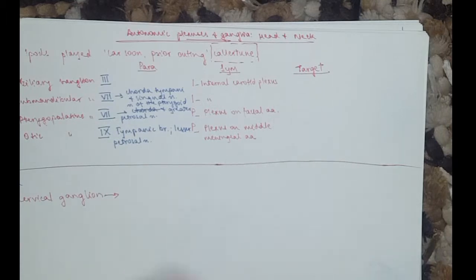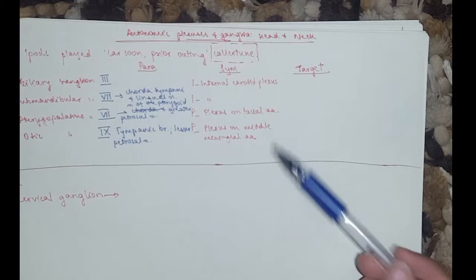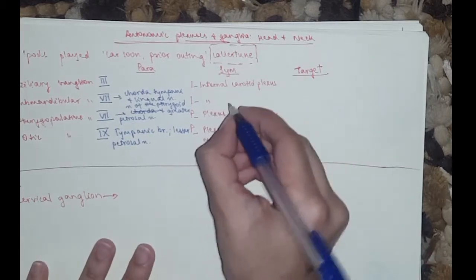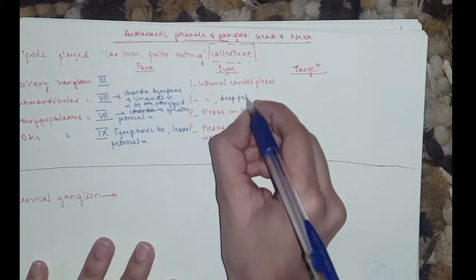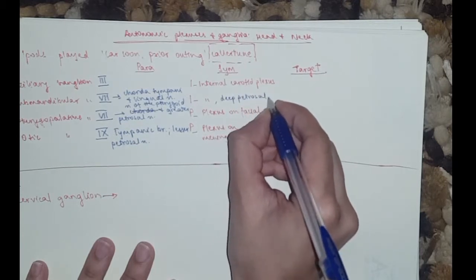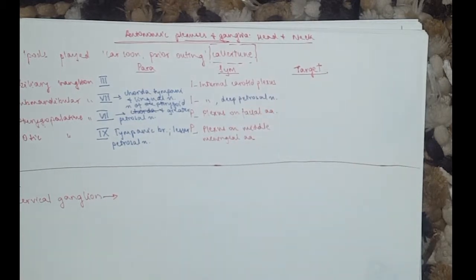So along with the internal carotid plexus for the second one, you would have the deep petrosal nerve.